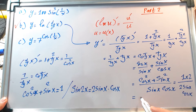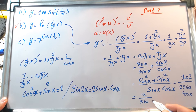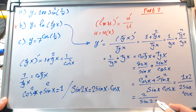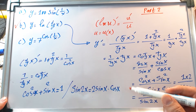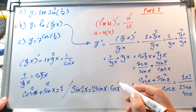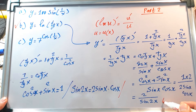Therefore, the final answer is 2 over sin(2x), and this is the answer.